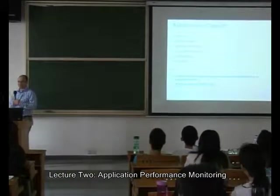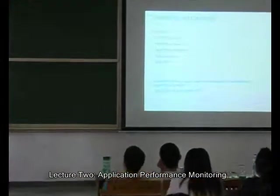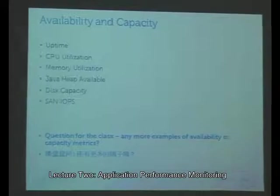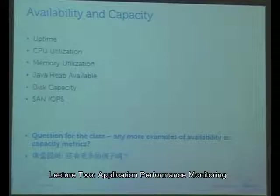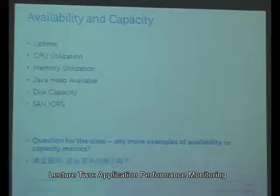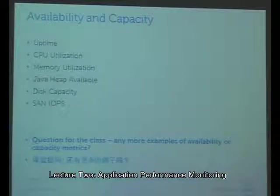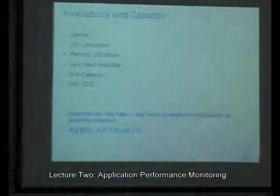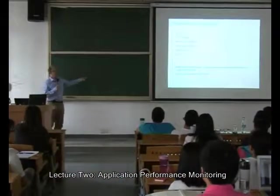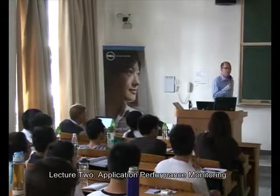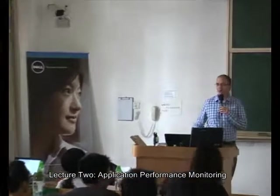Availability and capacity is about the resources you have. Performance and throughput measures responsiveness or load; availability and capacity measures how much of something you're using. Examples: CPU utilization, memory utilization, Java heap utilization, how much disk I/O you're using. For an availability and capacity example from the classroom: number of seats in the classroom, number of seats used, number of seats available.